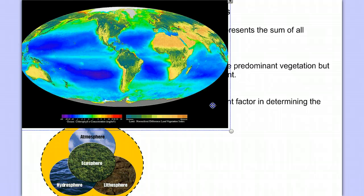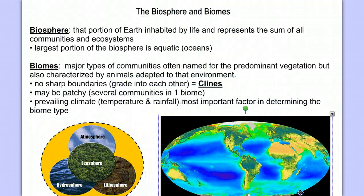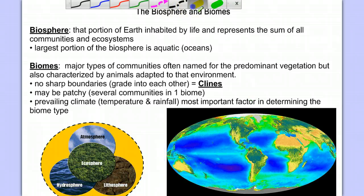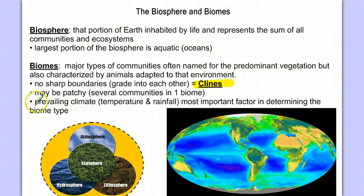Making up this biosphere are many biomes. A biome is defined as major types of communities, often named for the predominant vegetation, but also characterized by the animals that have adapted to that environment. There are very seldom sharp boundaries between each biome — they kind of grade into each other in what we call a cline. They may be patchy and have a prevailing climate, temperature, and rainfall, which is most important in determining the biome type.